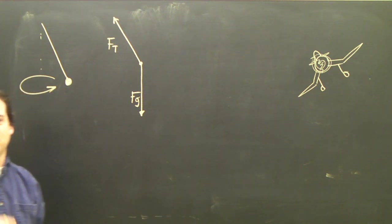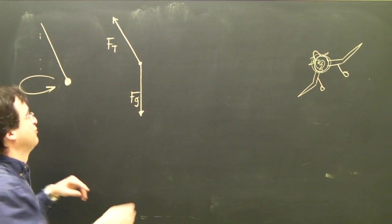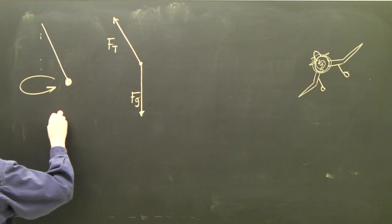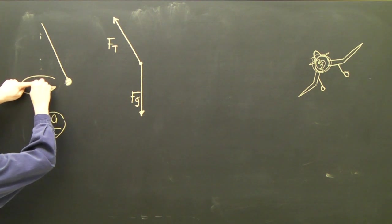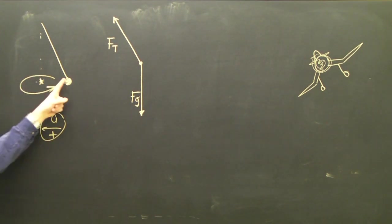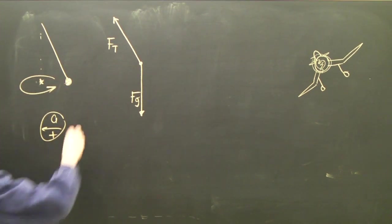Is there friction? We're ignoring friction. And it's not sitting on a surface, so there's no normal force. Is it accelerating? This is accelerating towards the center of rotation of the circle. It's going like this, so the center of rotation would be here, so it's accelerating now.